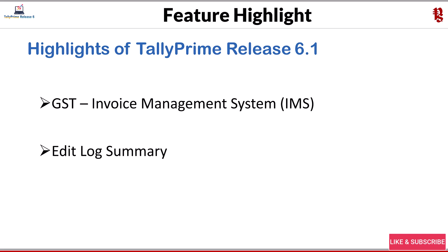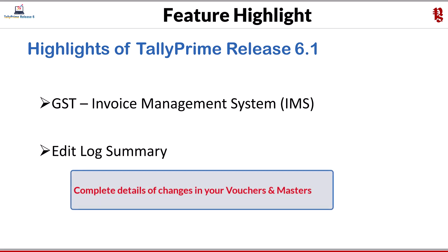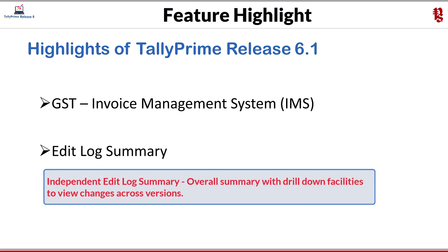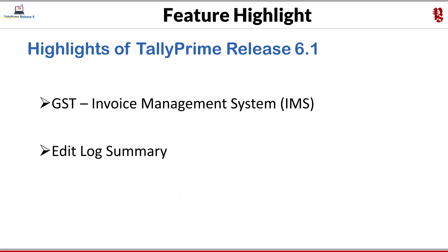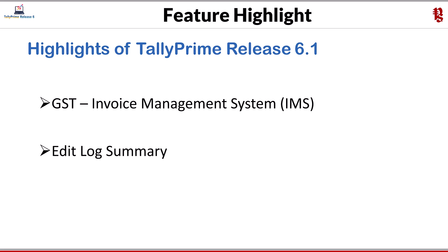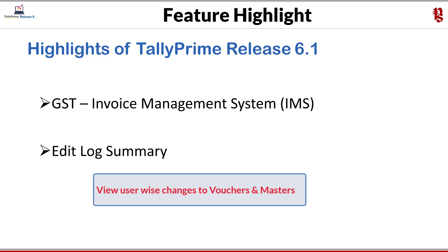The next feature is Edit Log Summary, available in the Tally Prime edit log version. From this release, Edit Log Summary will provide complete details of changes in your vouchers and masters. You can track numbers and versions for altered, non-altered, and deleted vouchers and masters. There is an independent Edit Log Summary with drill-down to individual vouchers and masters to view changes across versions. A filter option is also provided by activity type — you can filter by version, period, or users. Once security is enabled, you can see which users made changes to vouchers and masters.